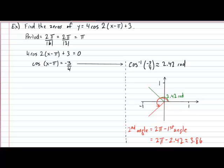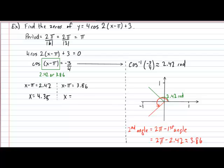With this information, we can now head back to our main procedure and state that the entire expression x minus pi can either equal 2.42 radians or 3.86 radians. Continuing our work, we will eventually determine that x could equal 4.35 radians or x could also equal 5.07 radians. Therefore, in our final conclusion, the zeros occur when x equals 4.35 radians and every pi radians after that, or the zero can also occur at 5.07 and then every pi radians after that. And that's all there is to determining the zeros of a cosine function in which the trig circle cannot help us determine our possible angles.